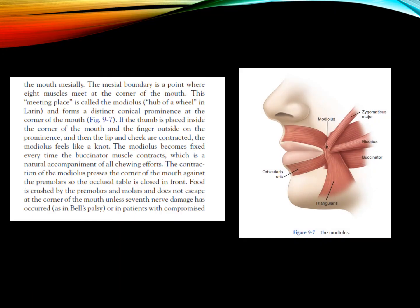If the thumb is placed inside the corner of the mouth and the finger outside on the prominence, and then the lip and cheek are contracted, the modulus feels like a knot. The modulus becomes fixed every time the buccinator muscle contracts, which is a natural accompaniment of all chewing effects. The contraction of the modulus presses the corner of the mouth against the premolars, so the occlusal table is closed in front.